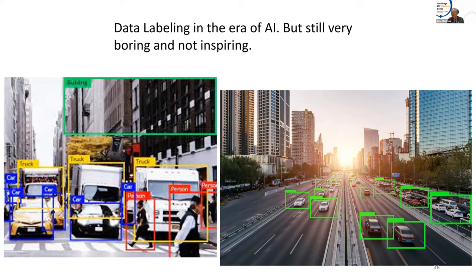In order to benefit from artificial intelligence, you have to make data into digital form so that somebody can copy and download it from the computer to run their software. This business called data labeling is something that they do.